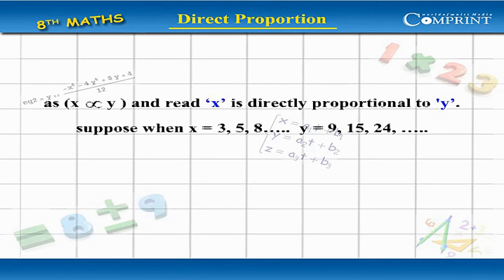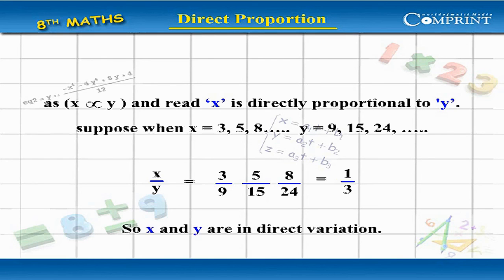Suppose when x equal to 3, 5, 8, and so on, y equal to 9, 15, 24, and so on. Then x by y equal to 3 by 9, 5 by 15, 8 by 24, equal to 1 by 3. So x and y are in direct variation.